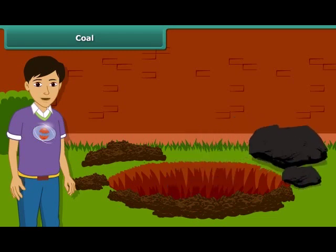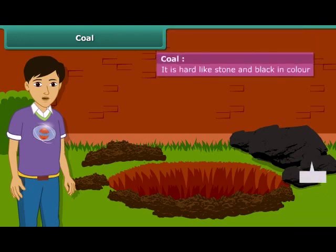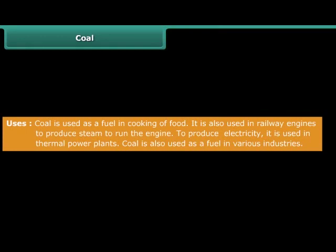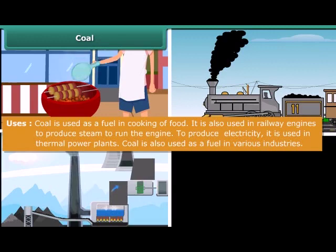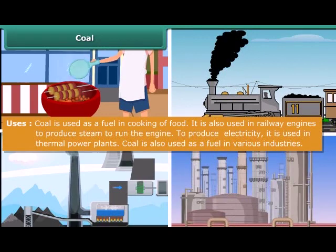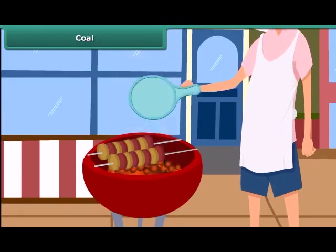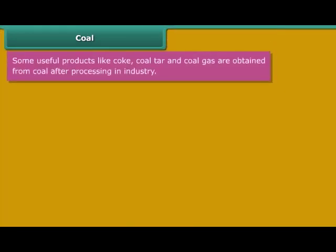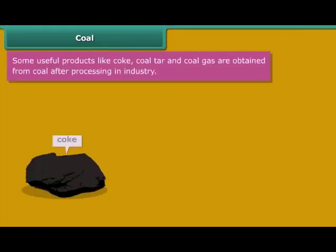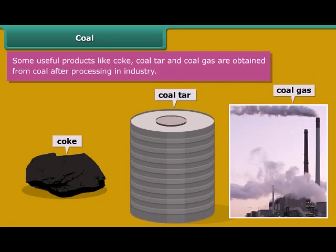You may have seen coal in your surroundings. It is hard and black in color. Coal is used for a variety of purposes such as cooking food, running railway engines, thermal plants and various industries. After heating in air, it starts burning and produces carbon dioxide gas. Some useful by-products of coal — coke, coal tar and coal gas — are obtained directly from coal.